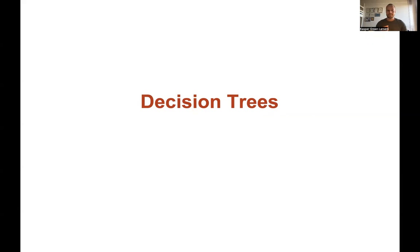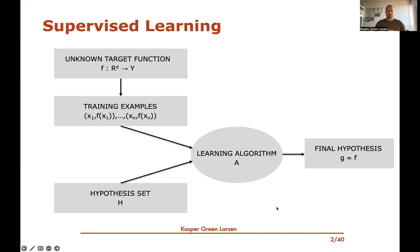Hi and welcome to this next video on machine learning where we talk about decision trees, which is another type of learning algorithm and hypothesis that we can use. Let's start by motivating it. In the last video we looked at the supervised learning setup where there's some unknown target function f that maps d-dimensional feature vectors to labels from a set y.